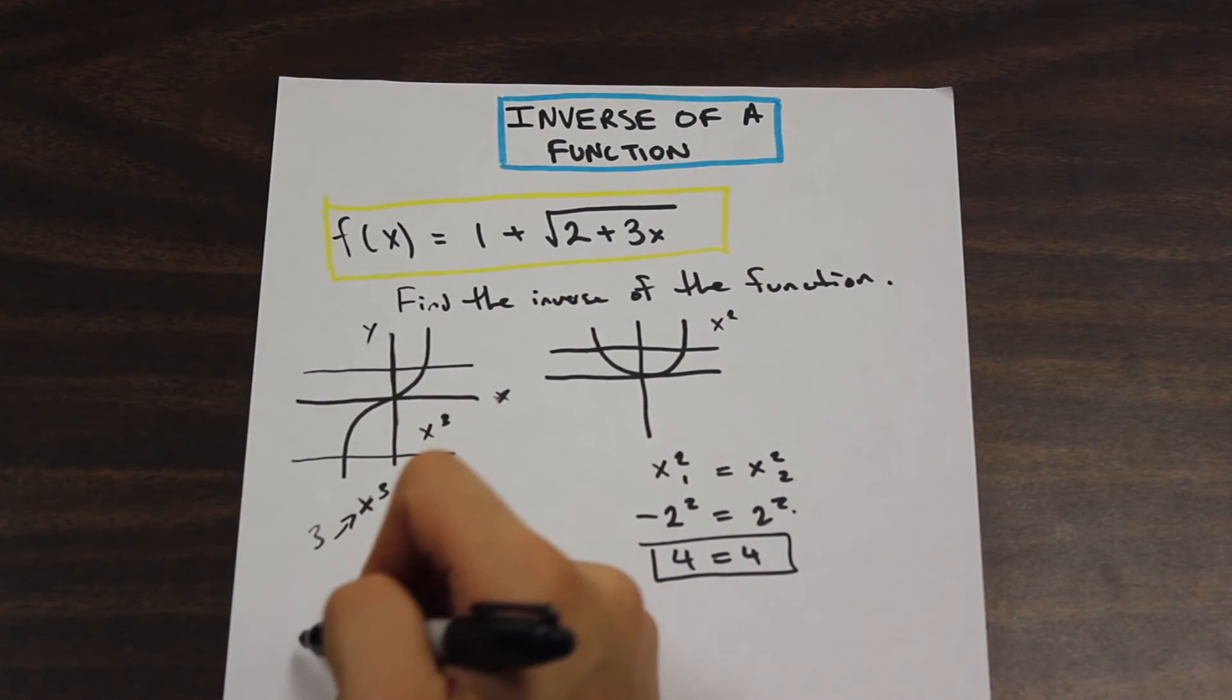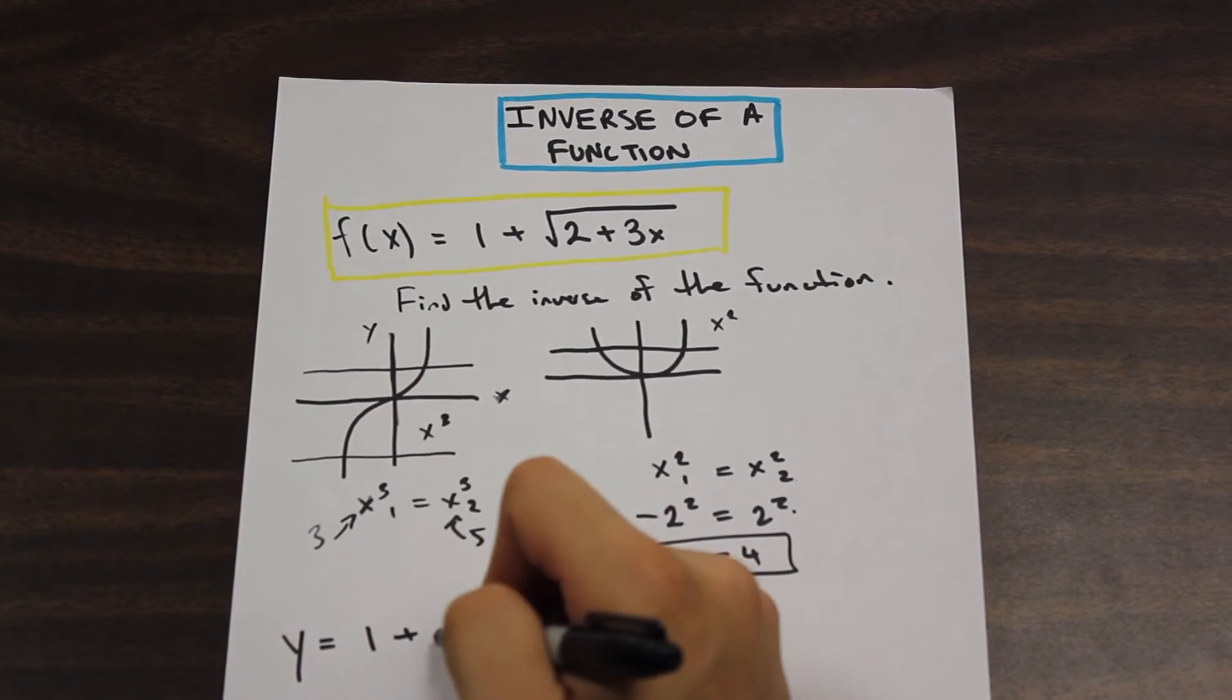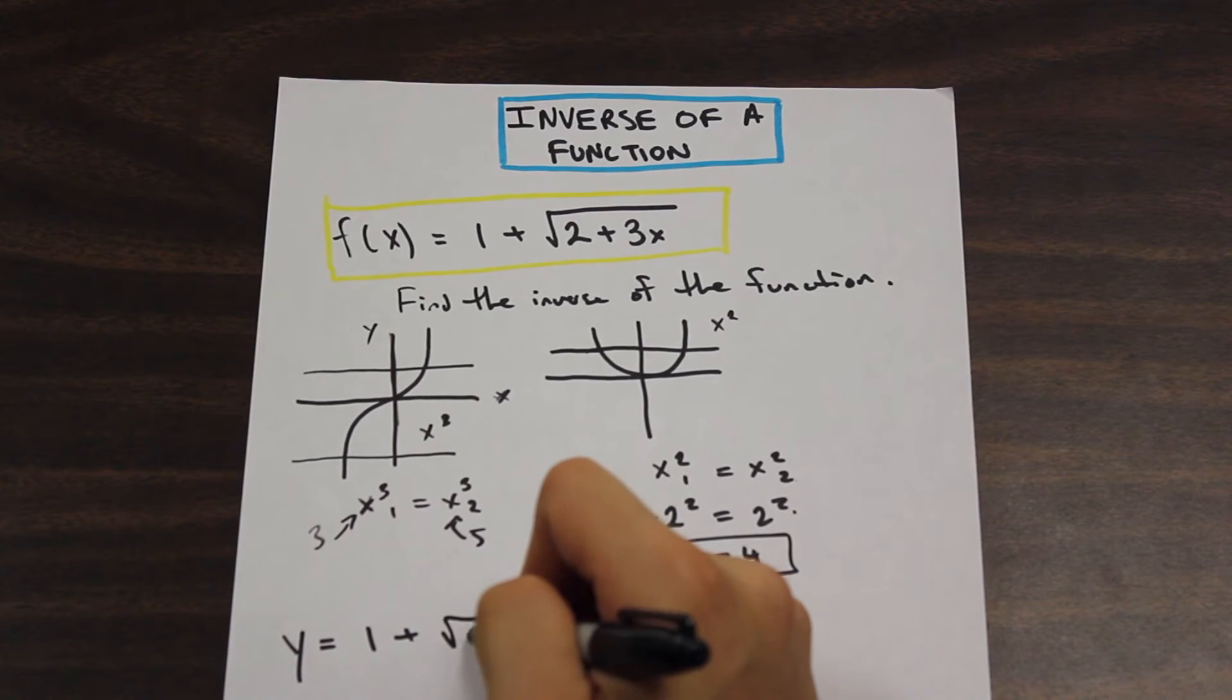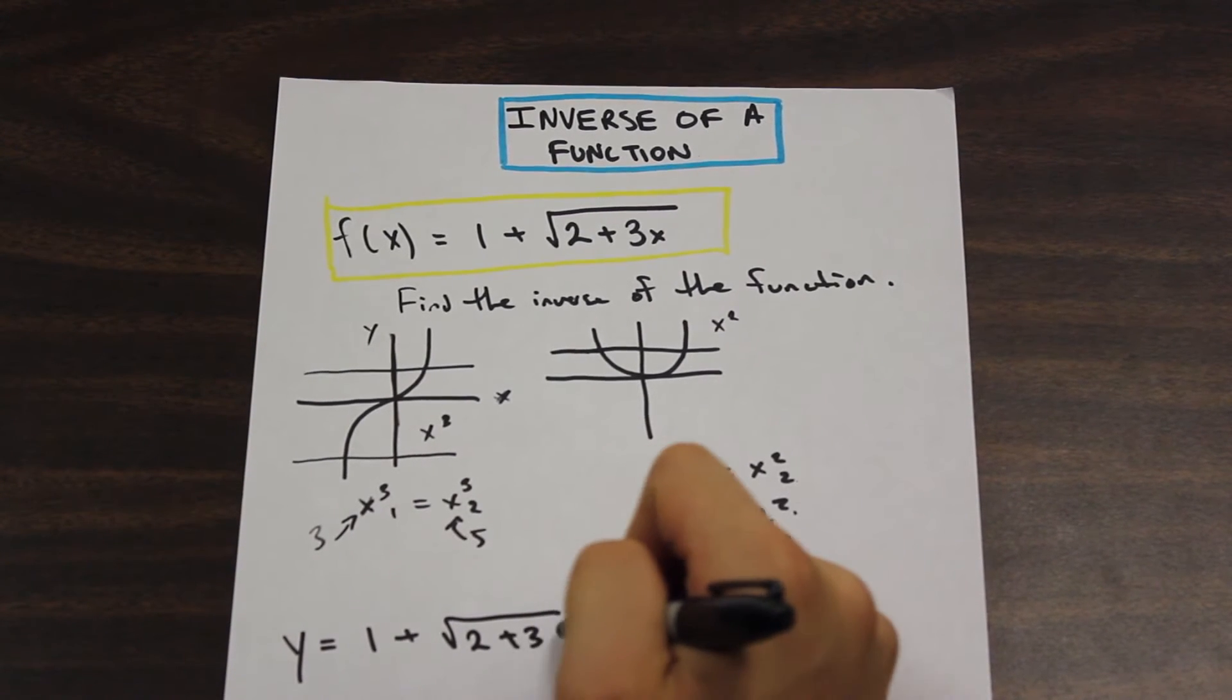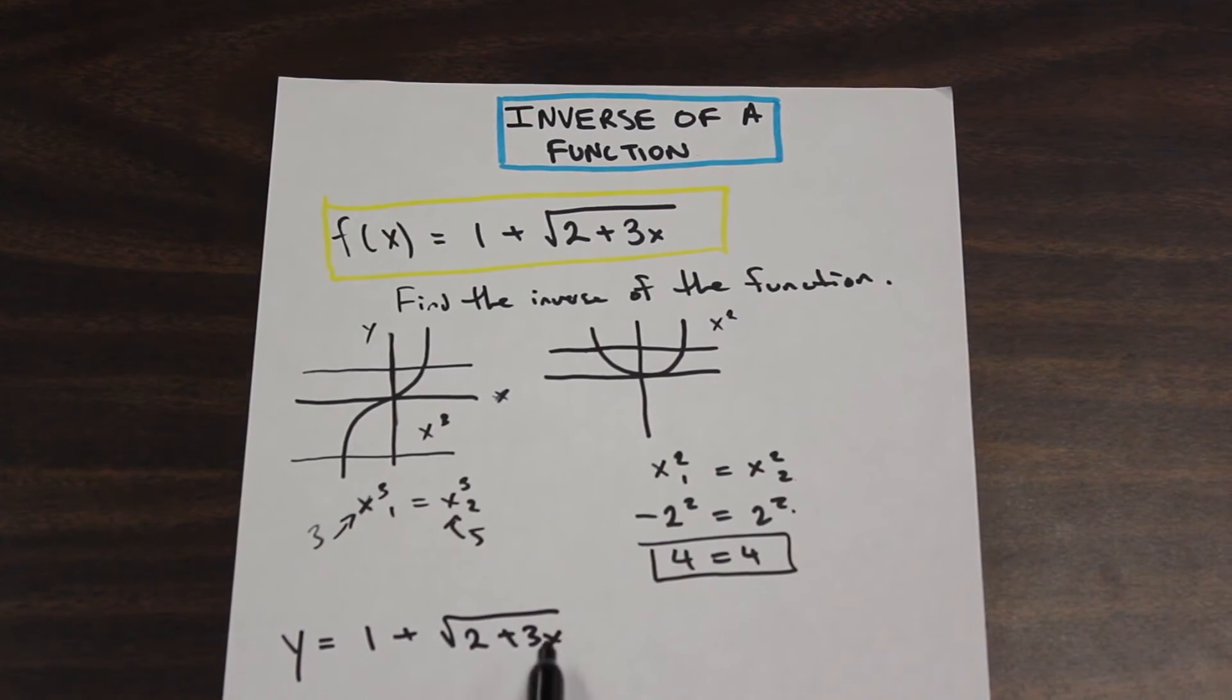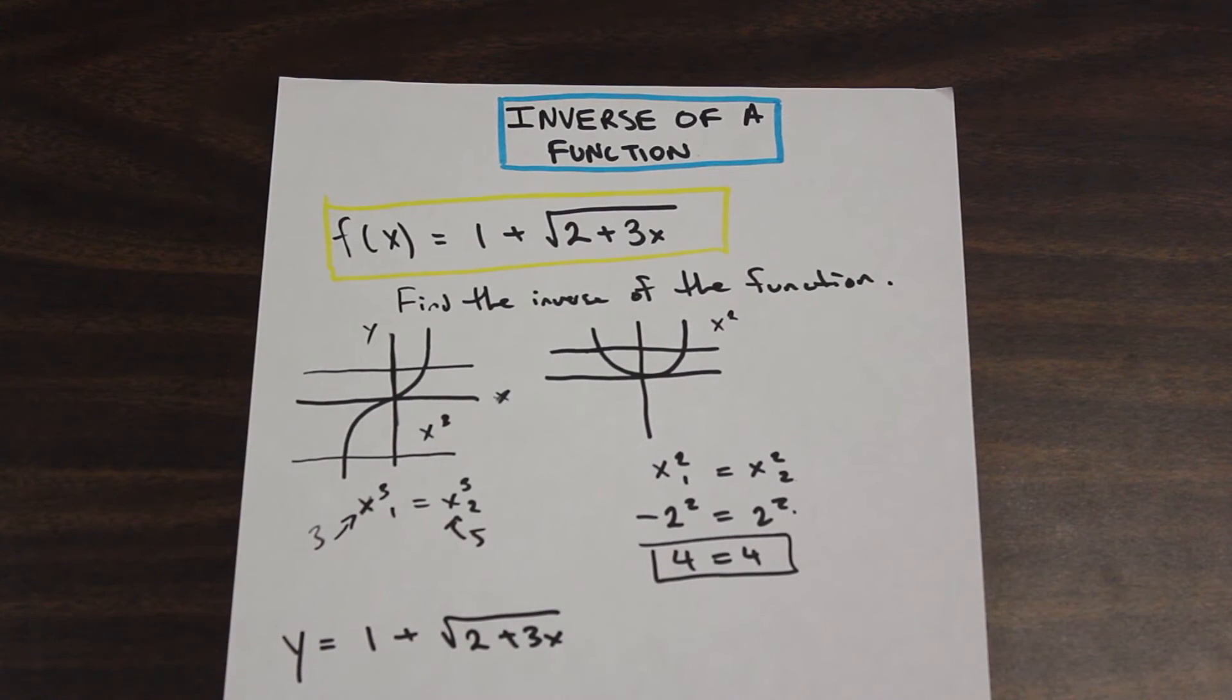So the way I like to do this is I like to just solve for the x variable. So as we can see, the x is the independent and y is the dependent variable. So we're going to solve for the independent variable, and then we're just going to flip them once x is isolated. So let's go ahead and do that.